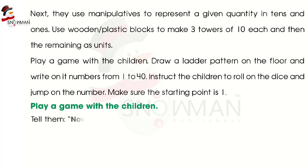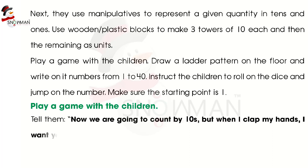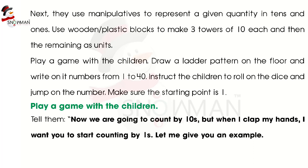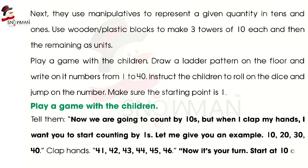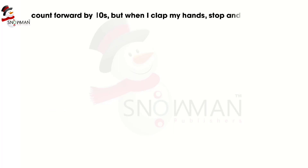Play another game with the children. Tell them: we are going to count by tens, but when I clap my hands, start counting by ones. For example: 10, 20, 30, 40 — clap — 41, 42, 43, 44, 45, 46. Now it's your turn: start at 10 and count forward by tens, but when I clap my hands, stop and count by ones. 10, 20, 30, 40 — clap.